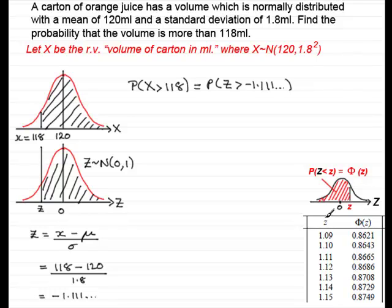And what we have here is z, z values, and phi z, this function phi z. Phi z is the probability of being less than any given value of z.